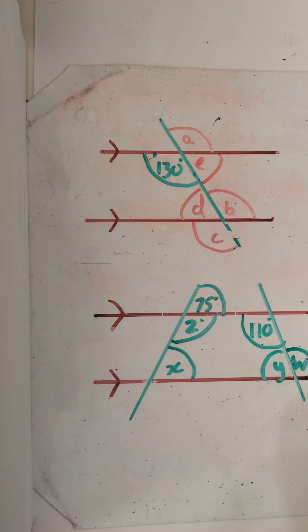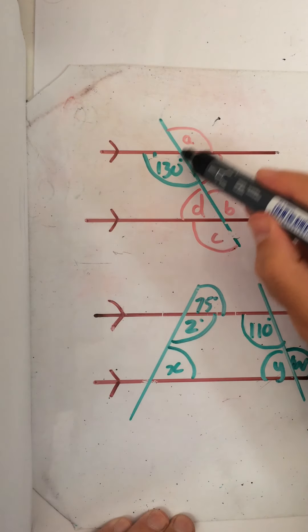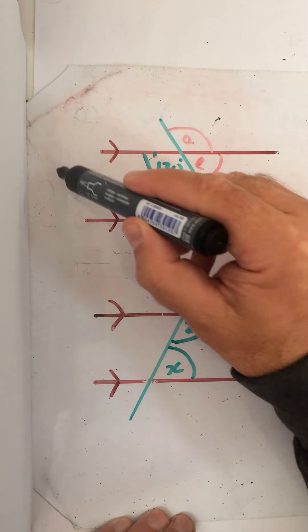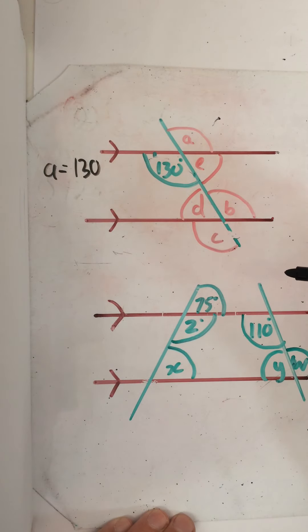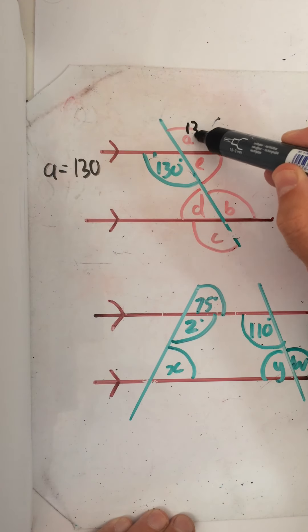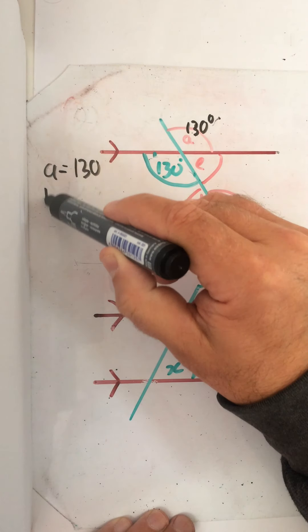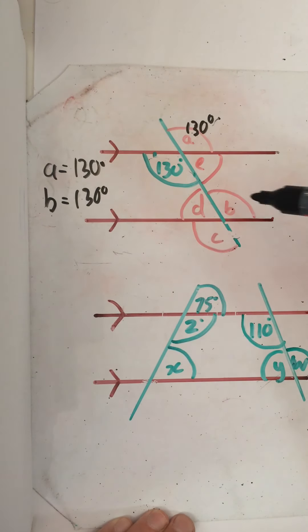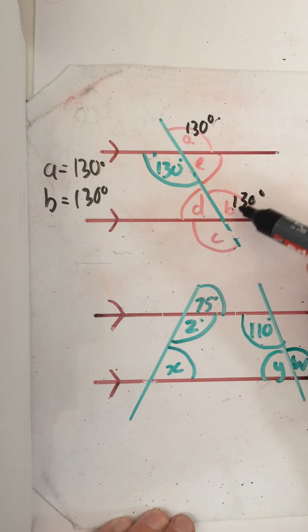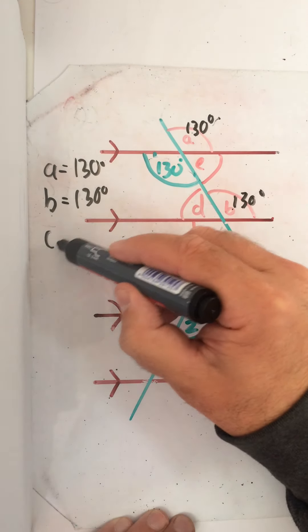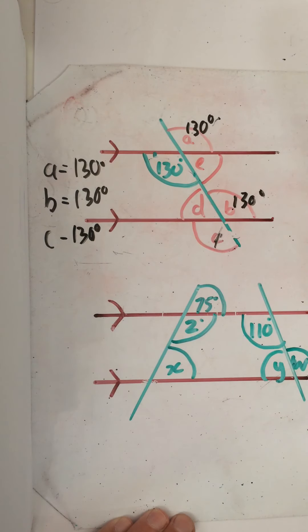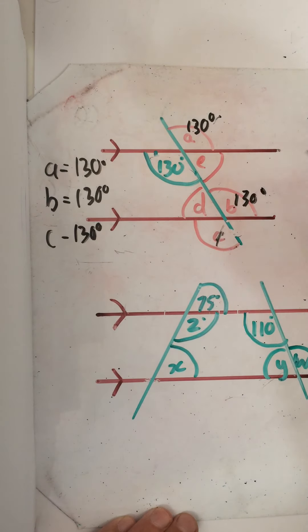Let's have a look at this first question. If I want to find angle A, I'm going to look at vertically opposite — I've got the 130, there's my vertically opposite angle, so A equals 130 degrees. Now if I wanted to do B, I know this is 130 degrees, and from A to B these are corresponding angles, so B would also be 130 degrees. Then I've got another vertically opposite angle, so C will also be 130 degrees. Normally when you do this work you have to write the reason — the name of the angle type — but we won't worry about that.